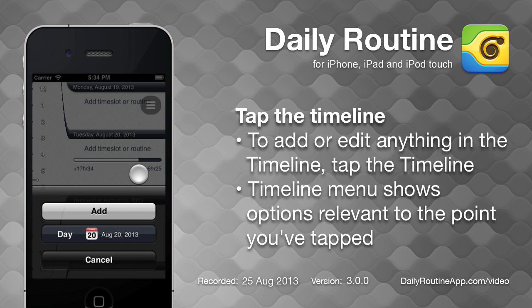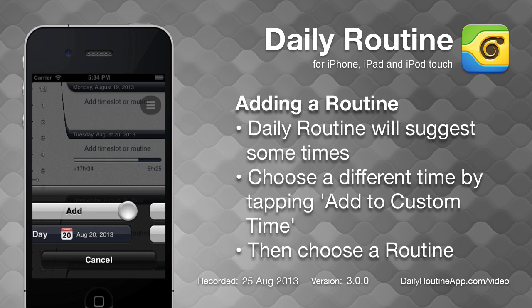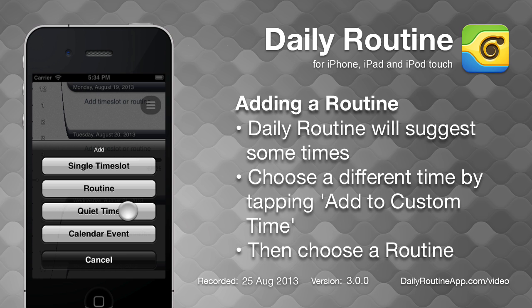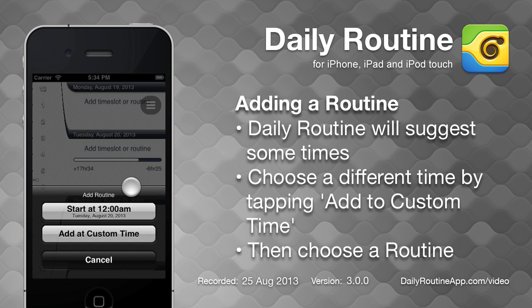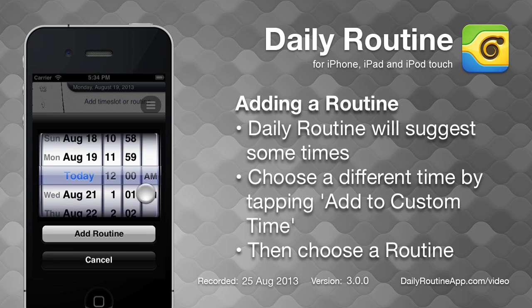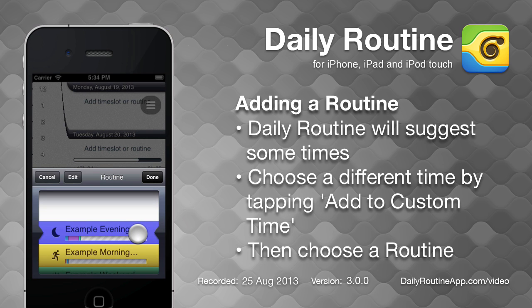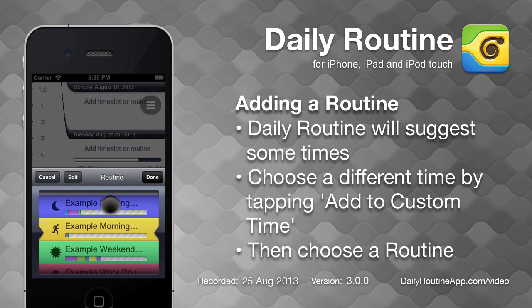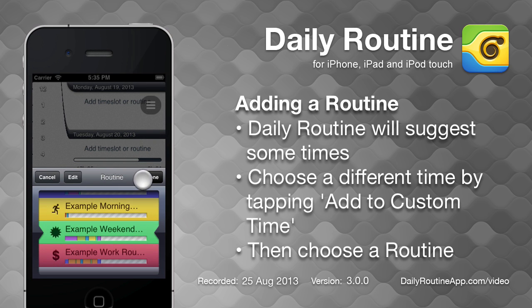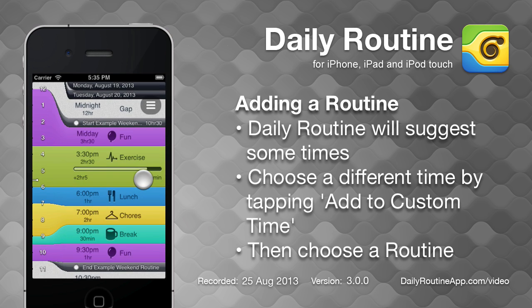To add a routine, we just tap Add, then choose Routine. We can accept a suggested time or pick our own, then choose a routine from our list, and the routine is now in the timeline.